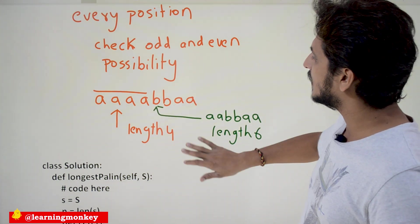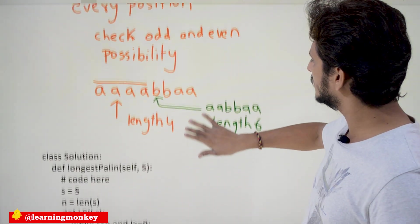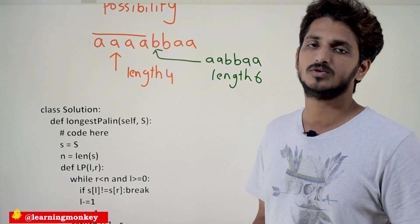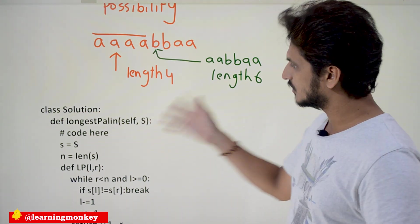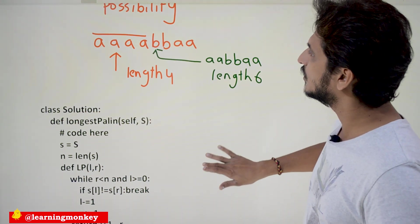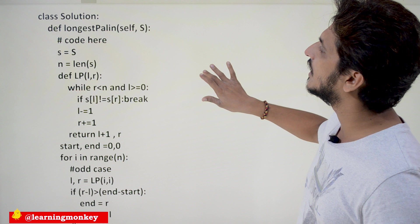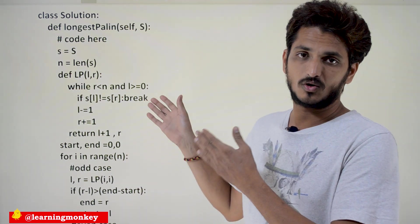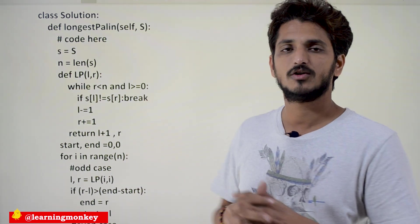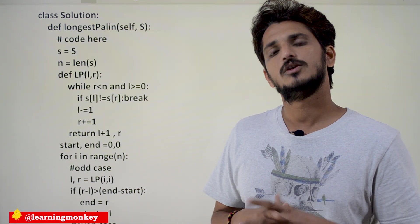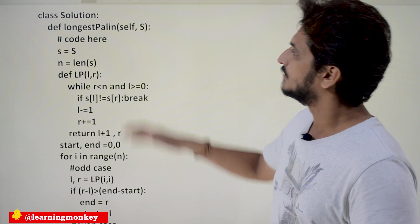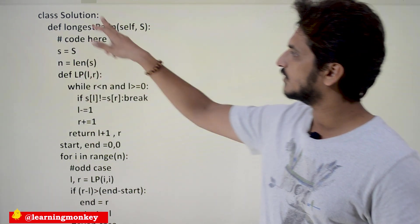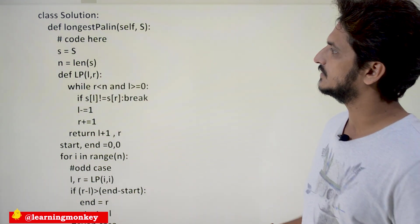Coming to the coding part — our suggestion is to try to solve it on your own first, then check for the solution. We are going to display the code, and the coding is also available on our website learningmonkey.in. You can visit and copy it, but we strongly suggest trying to solve it on your own.